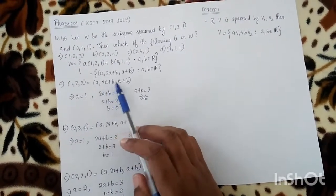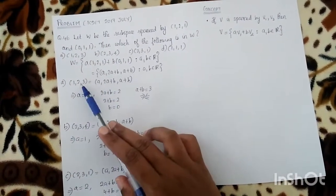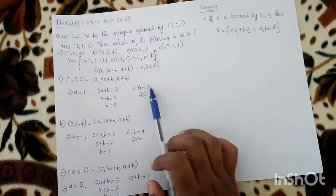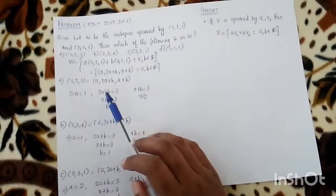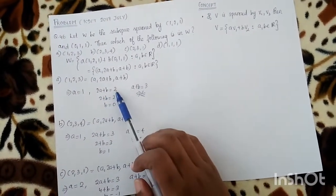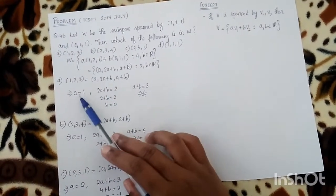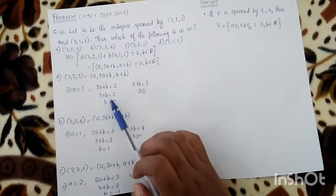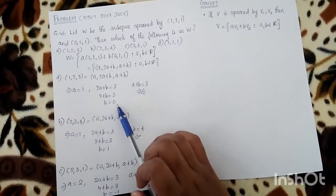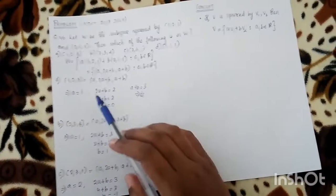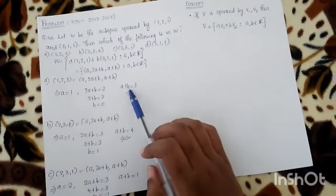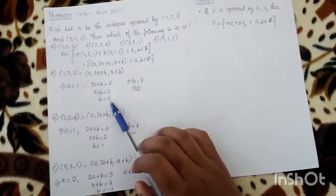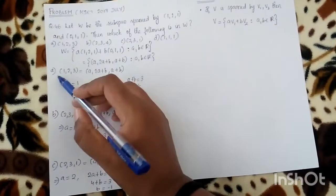For option A, (1,2,3): we need A=1, 2A+B=2, so B=0, but then A+B=1, not 3. So option A is wrong.